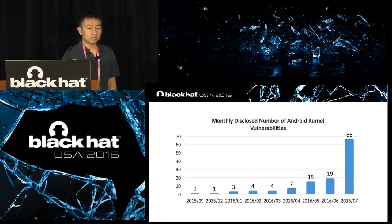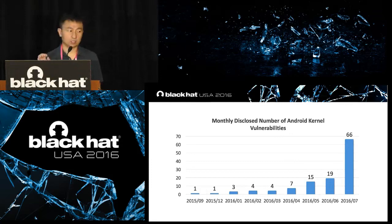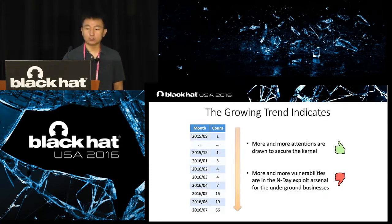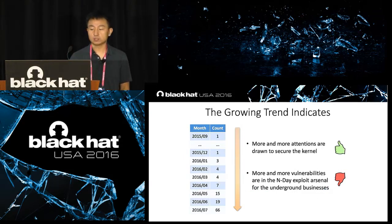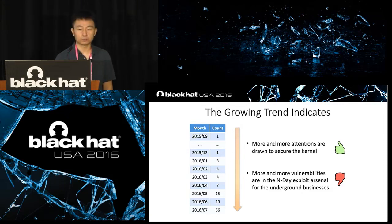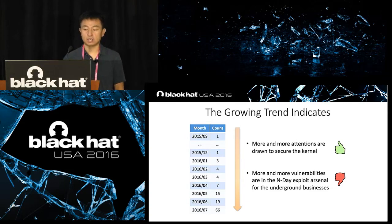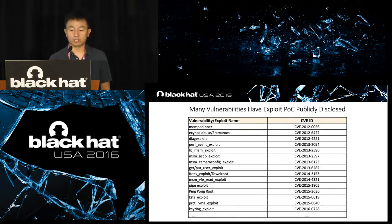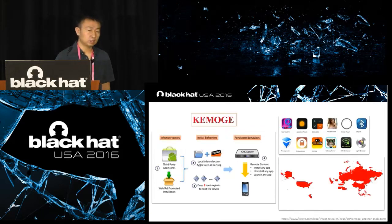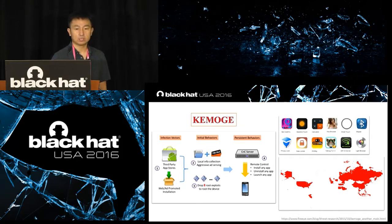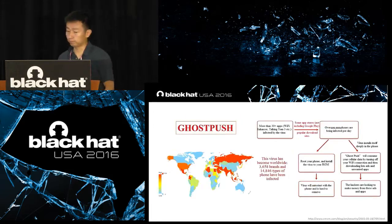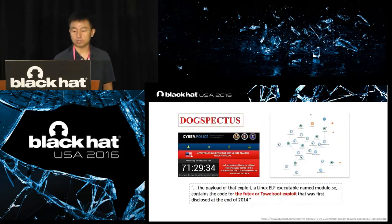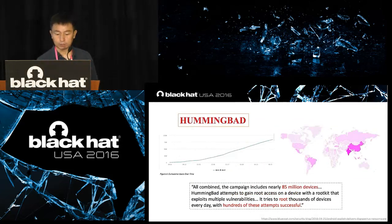Here is a graph for monthly disclosed kernel vulnerabilities. As you can see, it is increasing very fast. This green trend brings us one good news and one bad news. The good news is that more and more attention is drawn to securing the kernel. But the bad news is that on the ground, attackers have more and more vulnerabilities to exploit. And here is a list of many vulnerabilities with public available exploits.